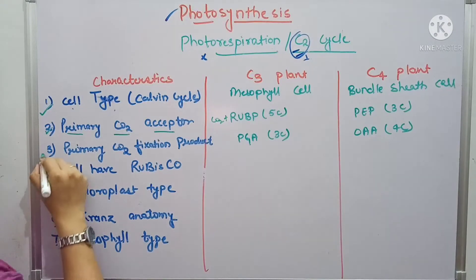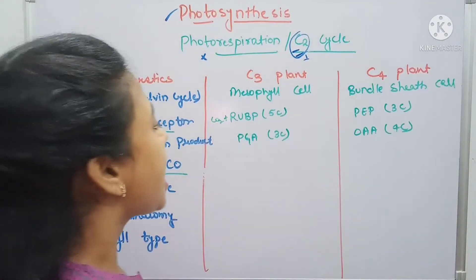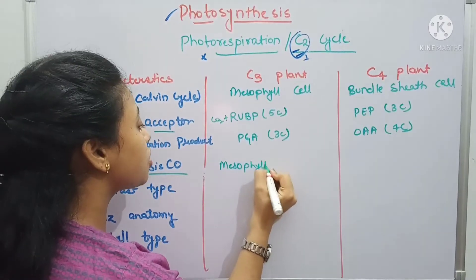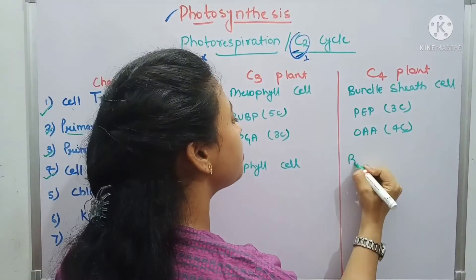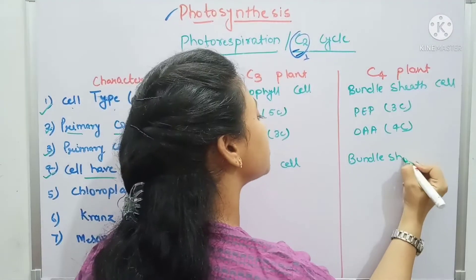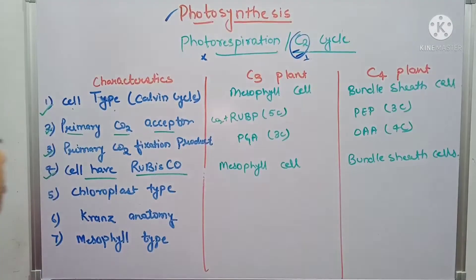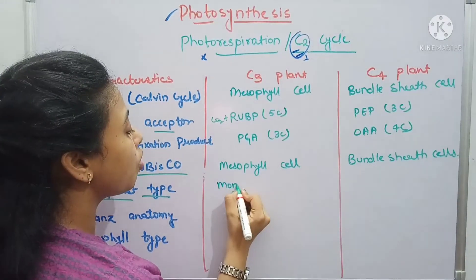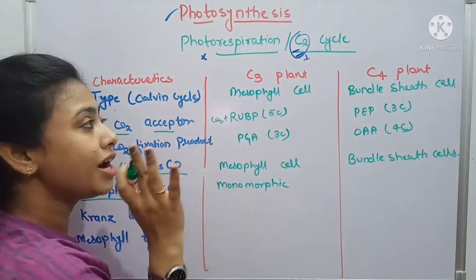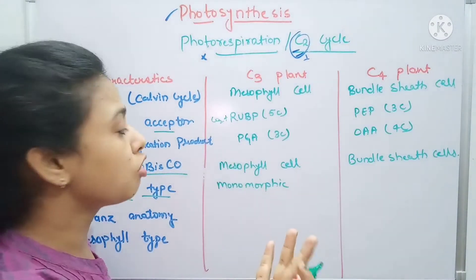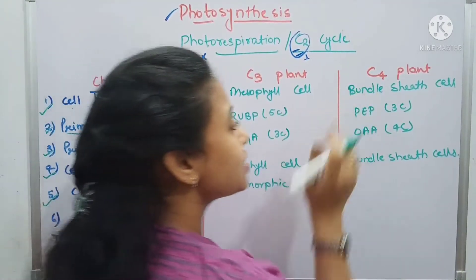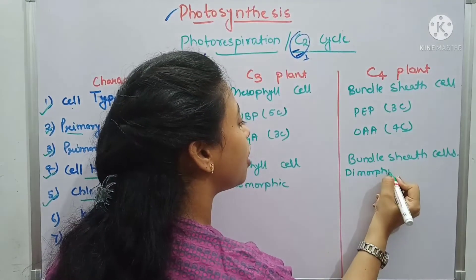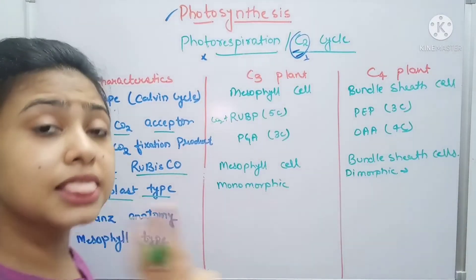The fourth point is which cells contain RuBisCO. In C3 plants, mesophyll cells have RuBisCO — that is why they are prone to photorespiration. In C4 plants, bundle sheath cells have RuBisCO. The fifth point is chloroplast type: in C3 plants it is monomorphic, meaning only one type of chloroplast is present in mesophyll cells. In C4 plants, there are two types of chloroplasts — it is dimorphic — one in mesophyll cells and one in bundle sheath cells.